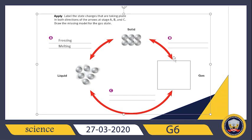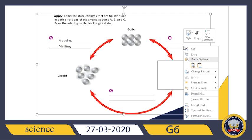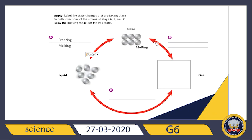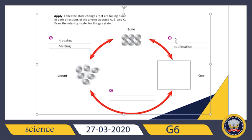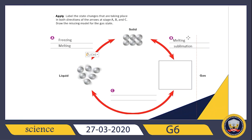For stage B, from solid to gas without becoming liquid, the process is called sublimation. The opposite process — from gas to solid — is called deposition.